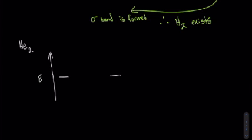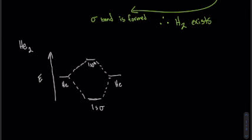So we will draw the individual helium atomic orbitals at the same level to indicate that they have the same amount of energy. And again, with two atomic orbitals, we're going to form two molecular orbitals, one bonding and one antibonding.